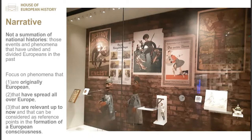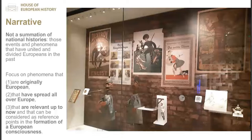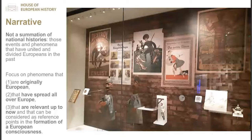The narrative is not the summation of national history. It focuses on events and phenomena that have united and divided Europeans — phenomena that are originally European, spread all over Europe, and still relevant today. One display case in the First World War section features objects from Italy, France, Great Britain, America, USSR, and Austria, all representing how propaganda in different countries encouraged hatred of the enemy. Those objects come from different national museums, but together at the House of European History they represent a transnational phenomenon.